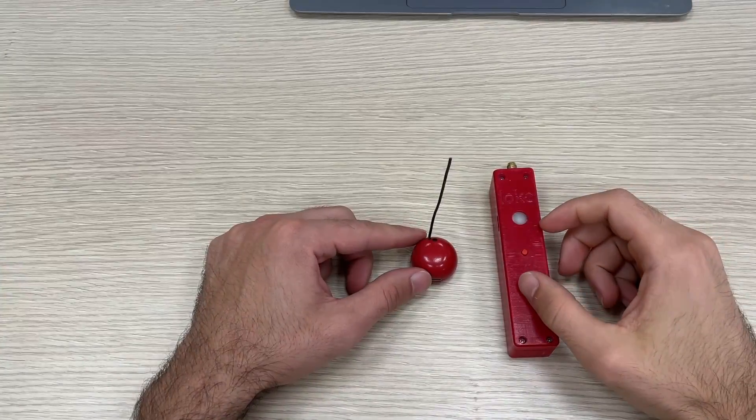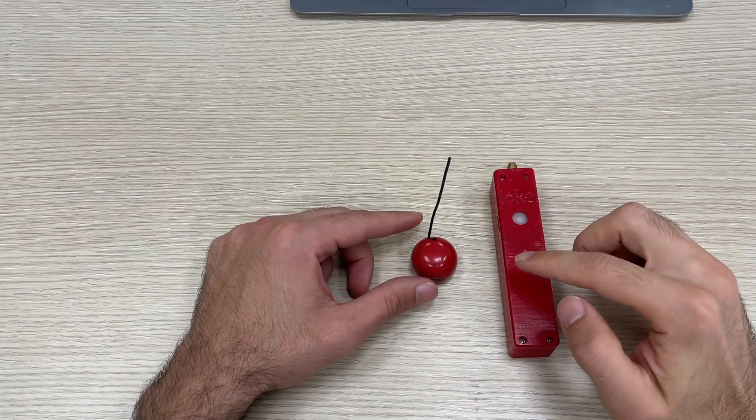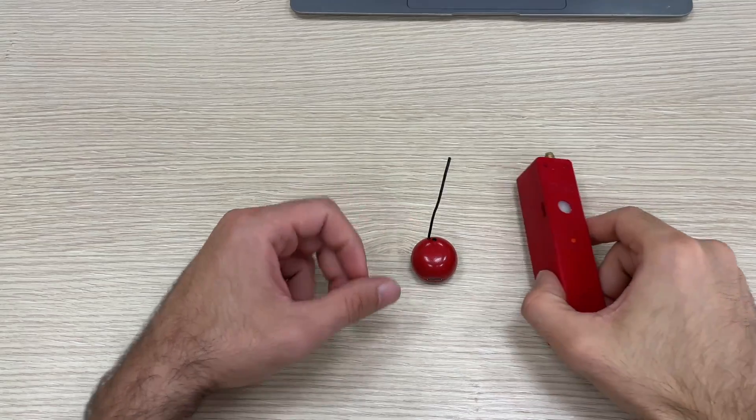Hello everyone. Today we will tear down the loka and I will show you the hardware side of the loka. This is the loka air unit and this is the loka ground unit. Let's start from the loka air unit.